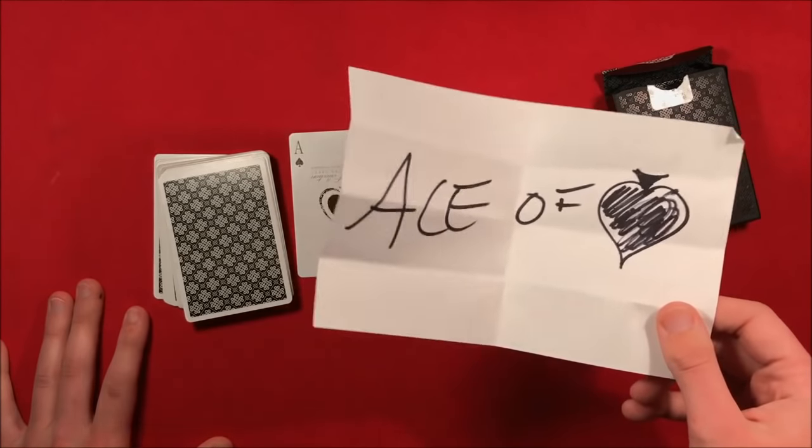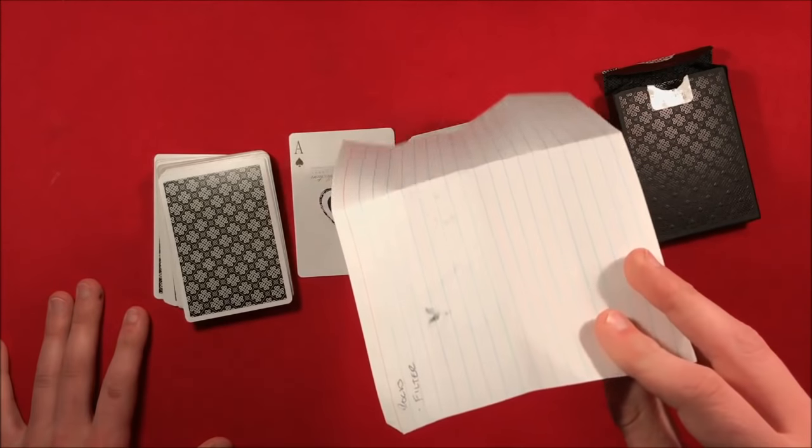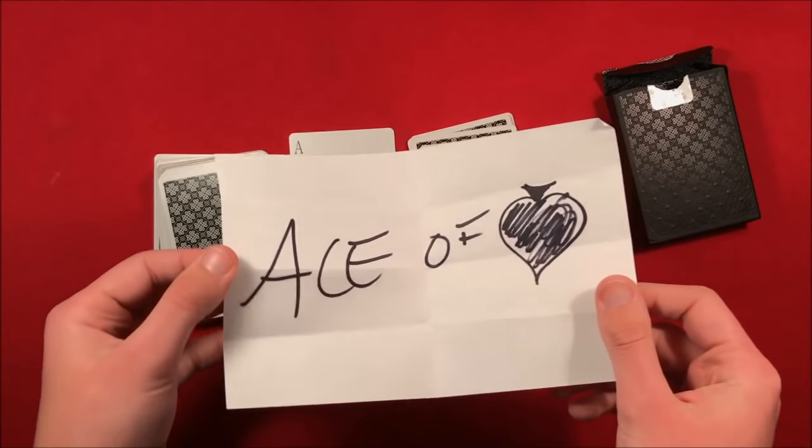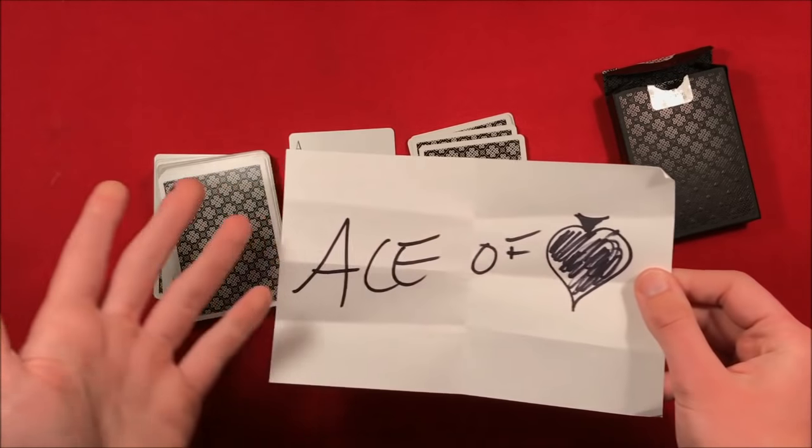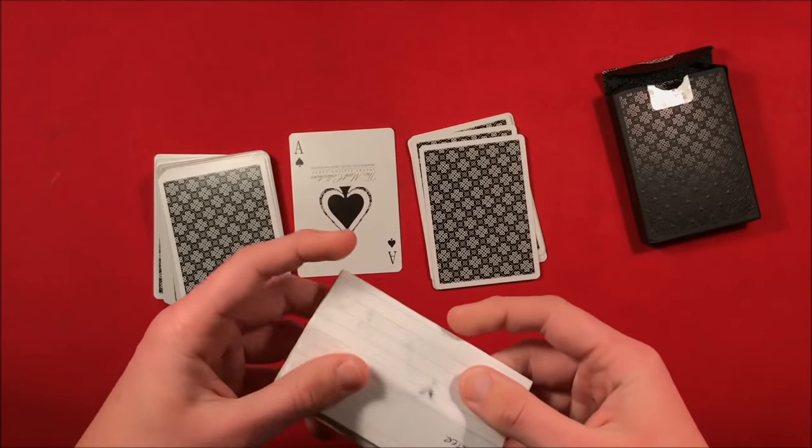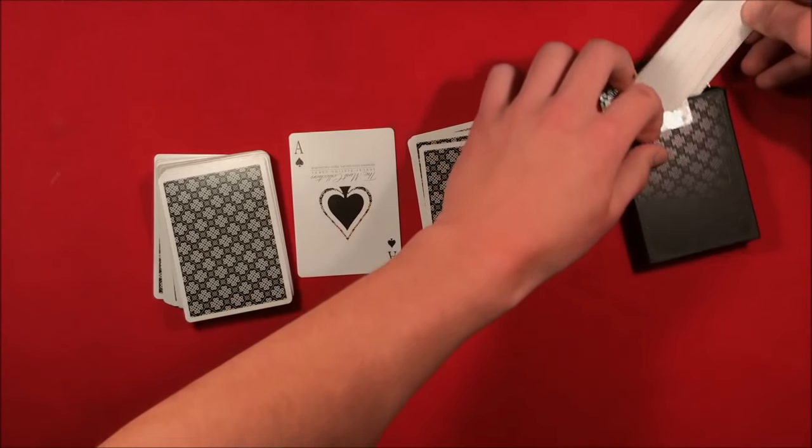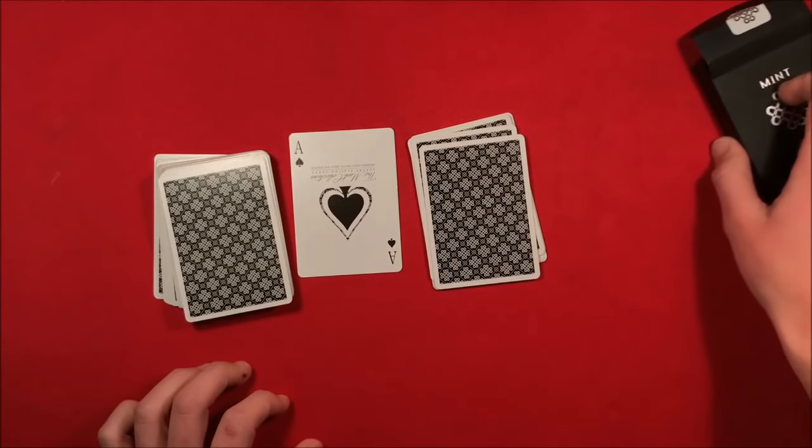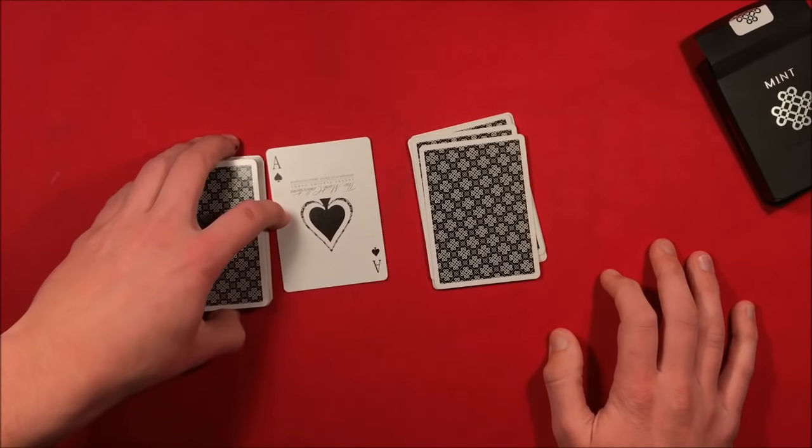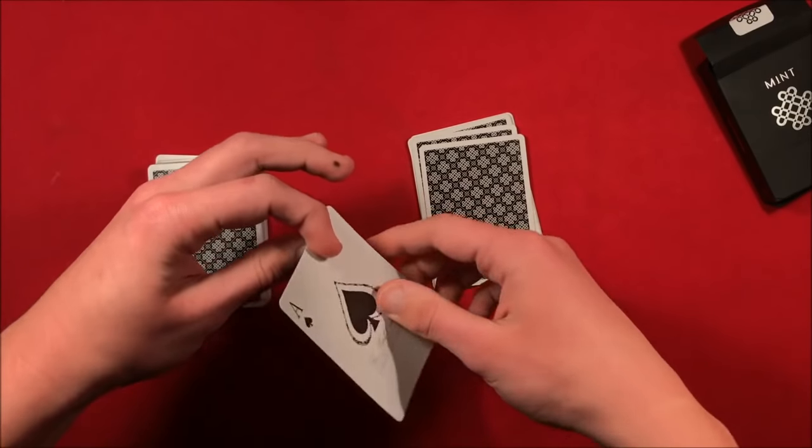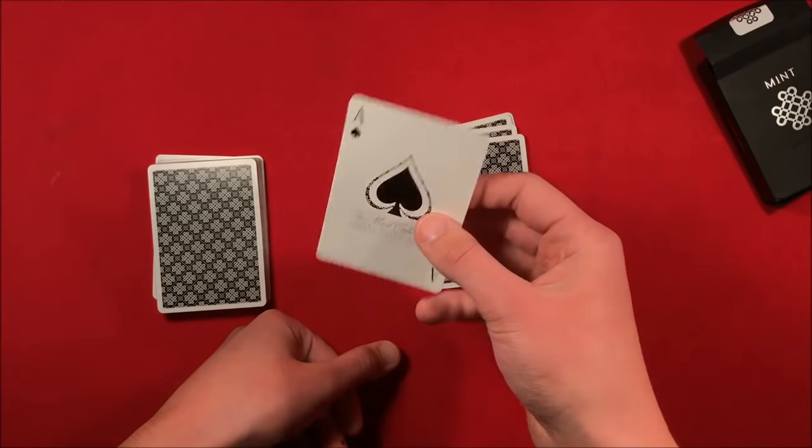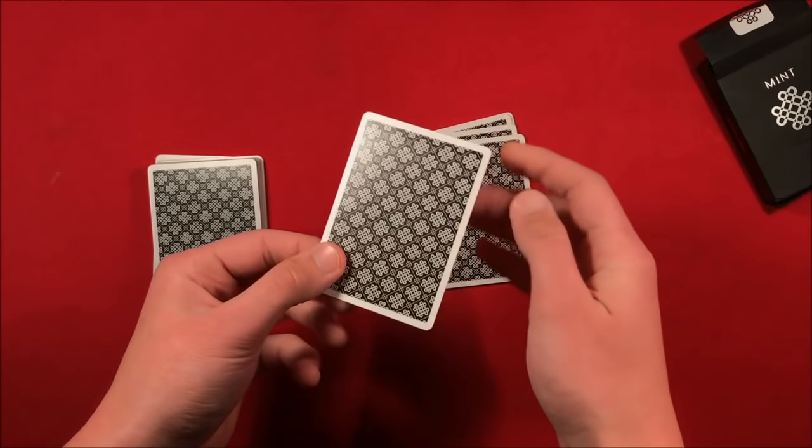All you have to do in order to do this trick is just get like a sheet of paper or something to write a prediction in. Fold that up. Whatever card you want, you can write the name of it. You're going to fold that up and save that for later. Let's say you stick the box off to the side. The next thing you do is you take the card that you are going to force.